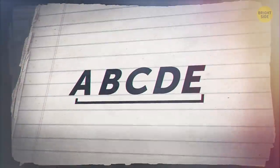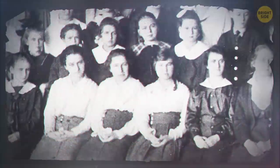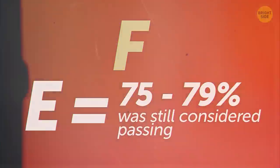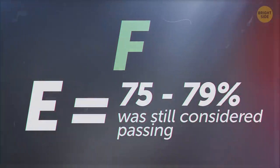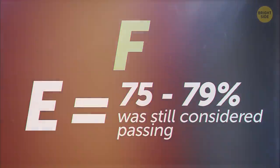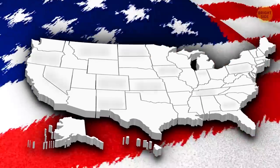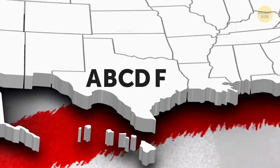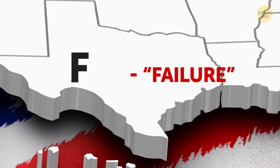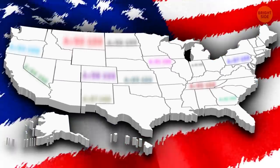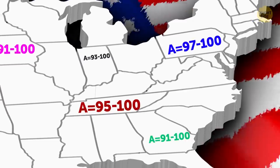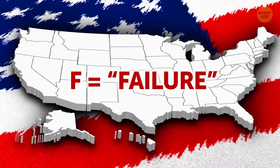The college made this change to their grading scale to allow a little wiggle room and give students one more passing letter grade. Once the F was added, E meant that the student's performance was between 75% and 79%, which was still considered passing. As this grading scale grew in popularity across the US, the E was eventually removed to simplify the scale, as F intuitively stood for failure.